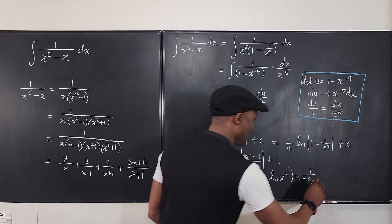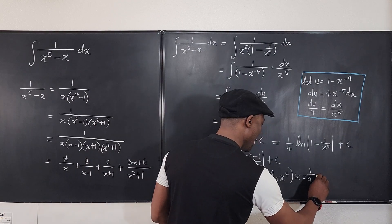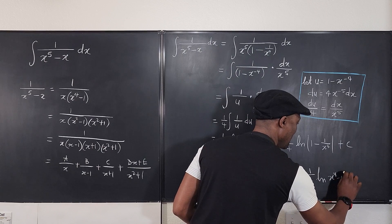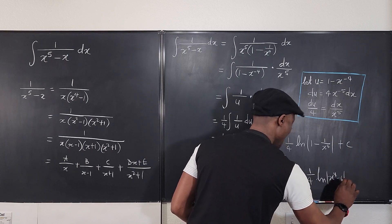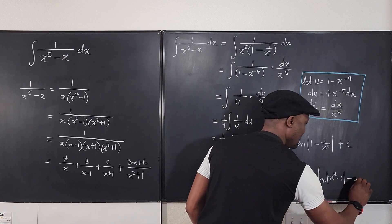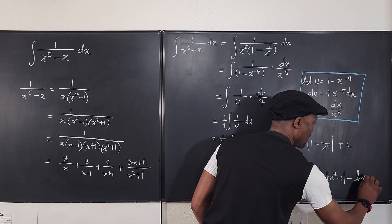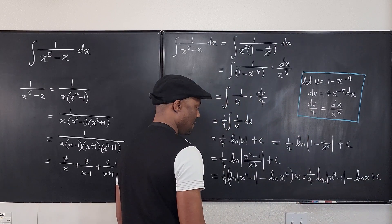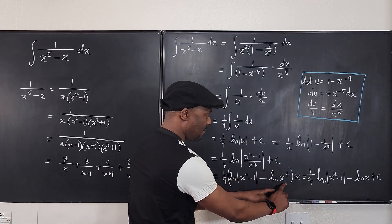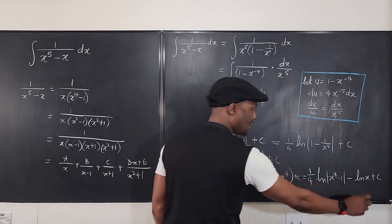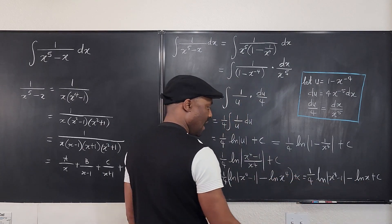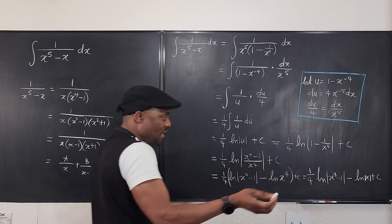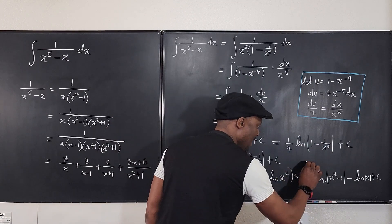So the answer can be written as 1 over 4 times the natural log of x to the fourth minus 1, minus the natural log of x, plus C. Because 1/4 applied to x to the fourth as a root just gives you x remaining. That would be your final answer — whichever form you prefer, I like this one the best.